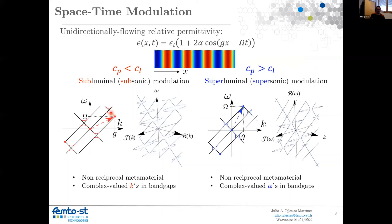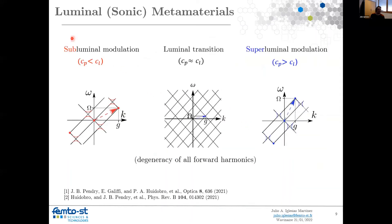Now, what happens when we go from one to another? When we pass from the subluminal case to the superluminal case, we make a transition through a very interesting point that is called the luminal transition. In this point, when our modulation CP is very close to our speed of the wave in the media,